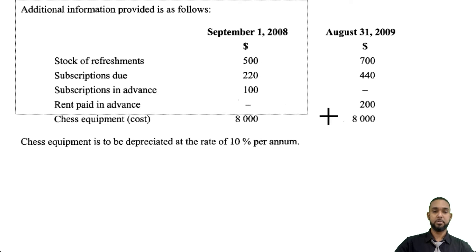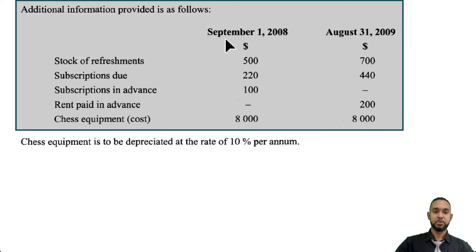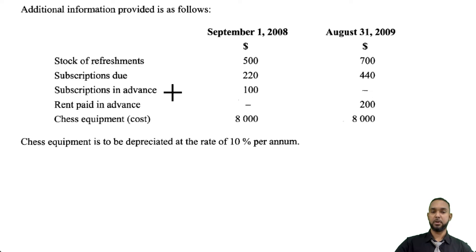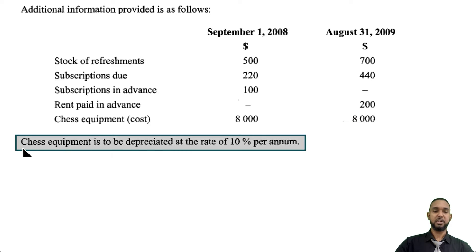They've also provided us with some additional information. We have opening balances on September 1st 2008 and closing balances on August 31st 2009. There are opening and closing stock balances, subscriptions due and in advance — accrued and prepaid revenue items — with no closing balance for the prepaid one, so we have to watch out for that. There's rent paid in advance with no opening balance but a closing balance, and chess equipment costing $8,000 to be depreciated at 10% per annum.